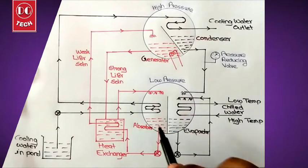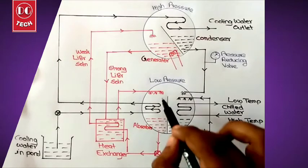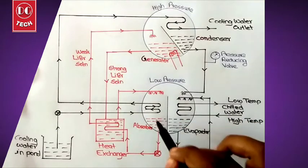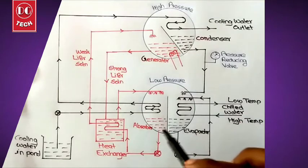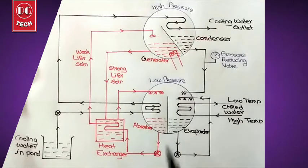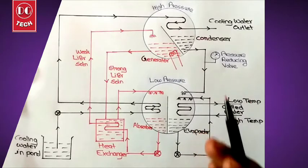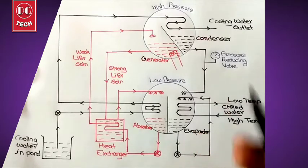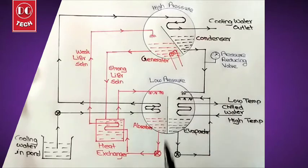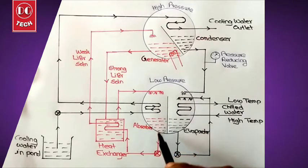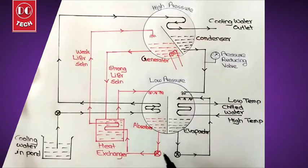In the absorber, it is filled with lithium bromide. The lithium bromide will absorb water vapor and it will get mixed. Such a mixture of lithium bromide and water is known as a weak mixture, because the water content in the lithium bromide is high—it is not strong lithium bromide. This weak lithium bromide is fed into the heat exchanger using a pump.